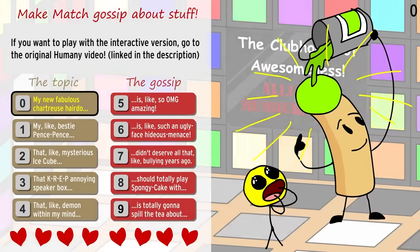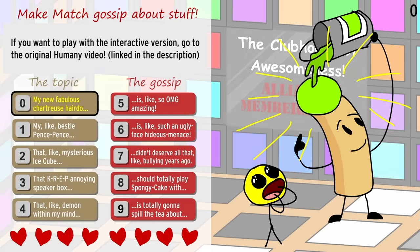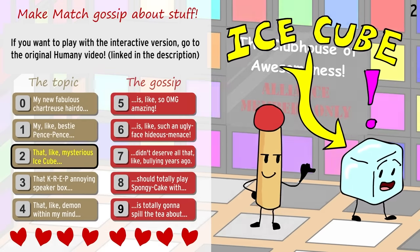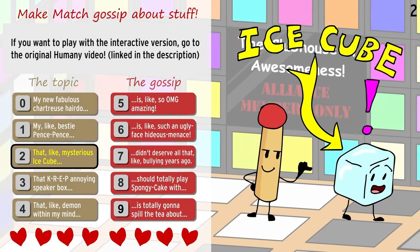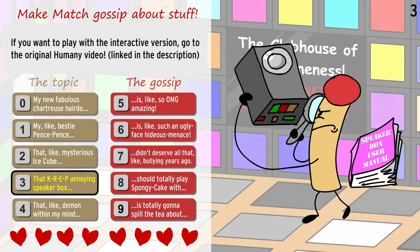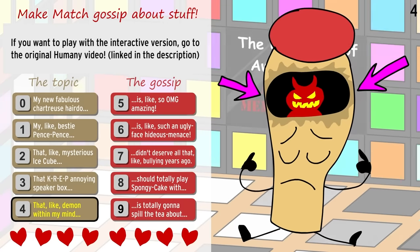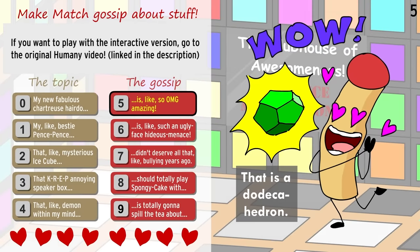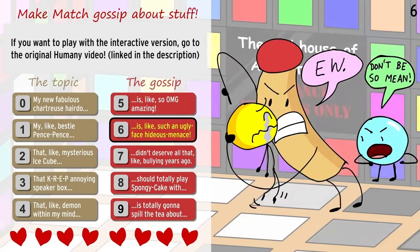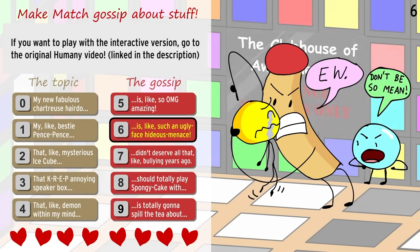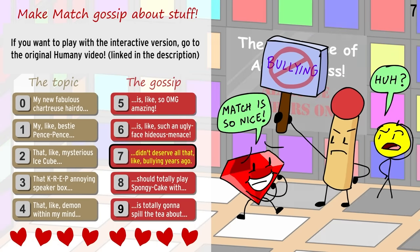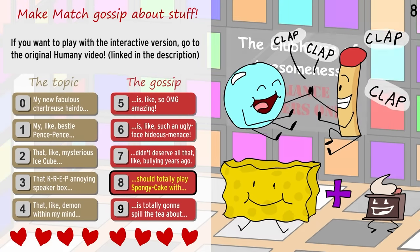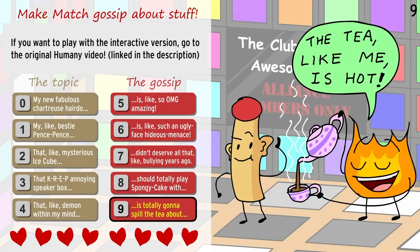Match gossips about you. My new fabulous chartreuse hairdo. My like bestie pence pence. That like mysterious ice cube. That KREP annoying speaker box. That like demon within my mind. Is like so OMG amazing. Is like such an ugly face hideous menace. Didn't deserve all that like bullying years ago. Should totally play spongy cake with. Is totally gonna spill the tea about.